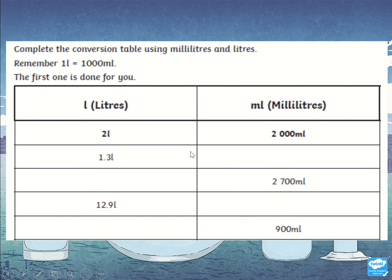This is a Level 2, which has some decimals. For 1.3 liters: the 1 means 1,000 milliliters and the 3 means 300, so that's 1,300 milliliters. For 2,700 milliliters you would write 2.7 liters. There's also 12.9 to work out. And if the value is less than 1,000 milliliters — like 900 milliliters — it would be 0.9 liters.